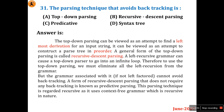A left-recursive grammar can cause a top-down parser to go into an infinite loop. Therefore, to use top-down parsing, we must eliminate all left recursion from the grammar. A form of recursive descent parsing that does not require any backtracking is known as predictive parsing. So to avoid backtracking, you use recursive descent parsing.